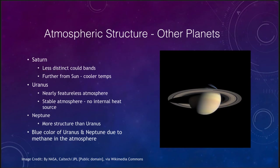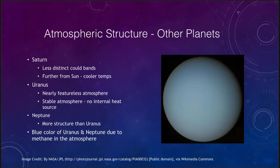Uranus is almost completely featureless — it has a nearly featureless atmosphere. It has a very stable atmosphere because it does not have an internal heat source like the other Jovian planets. So when we look at Uranus we get essentially no structures at all.